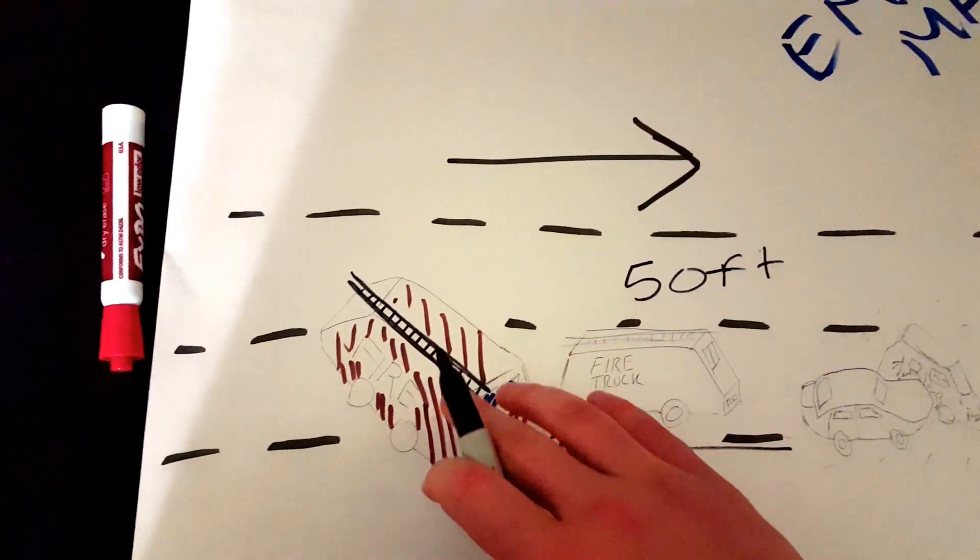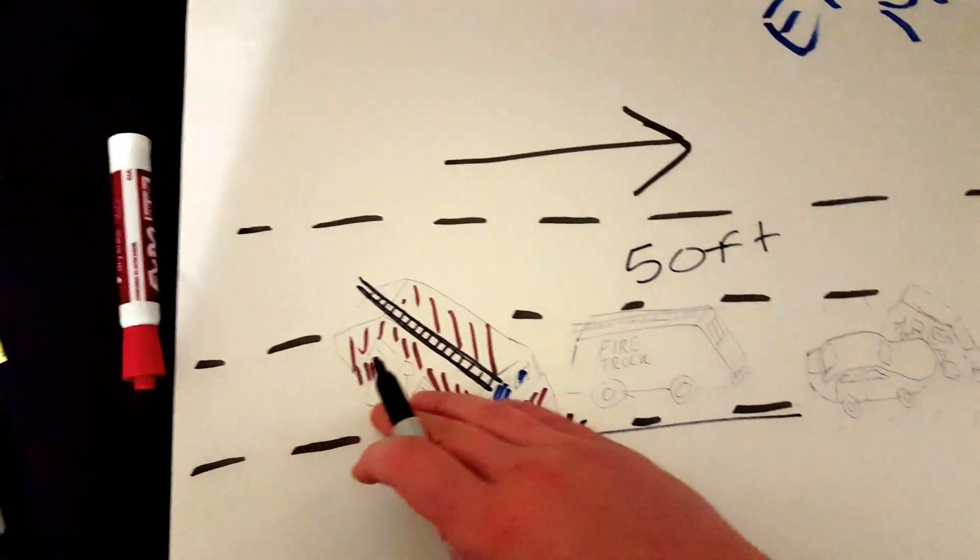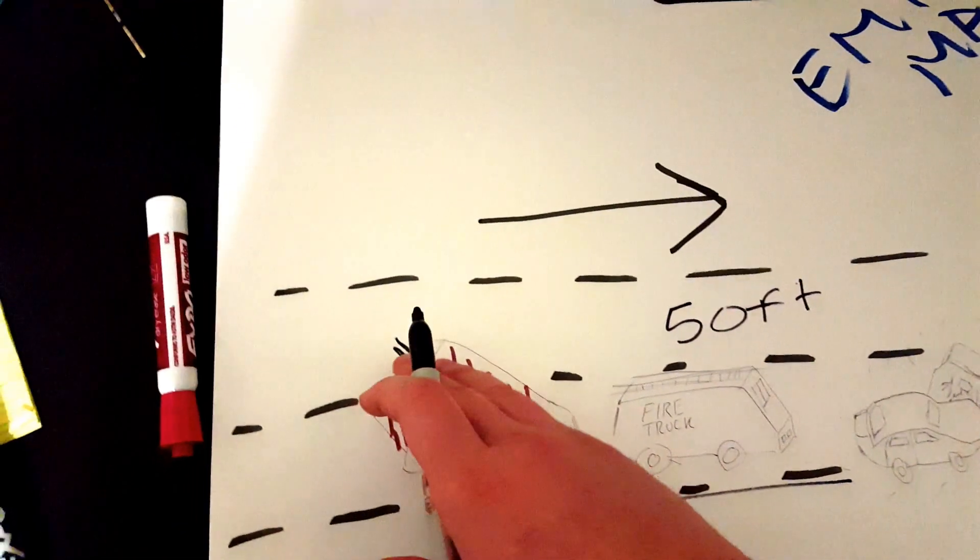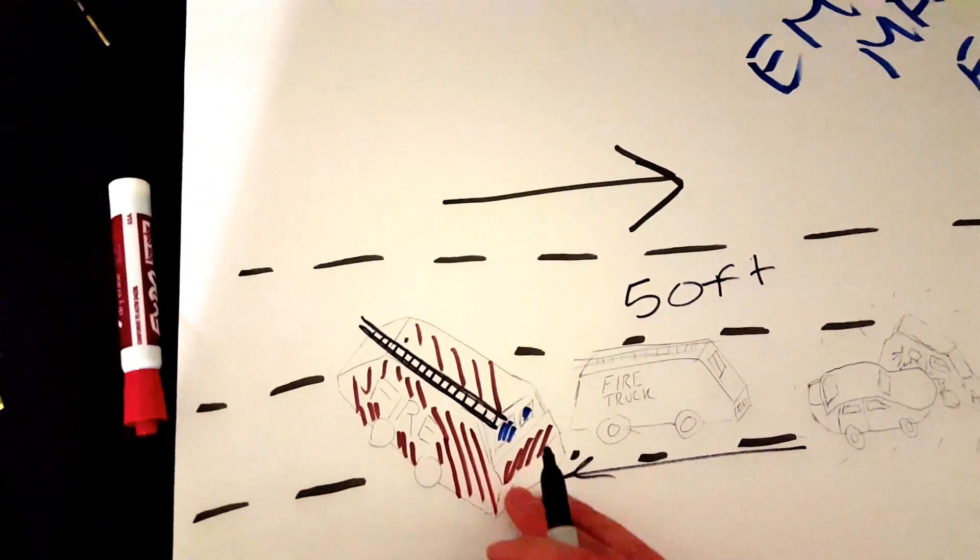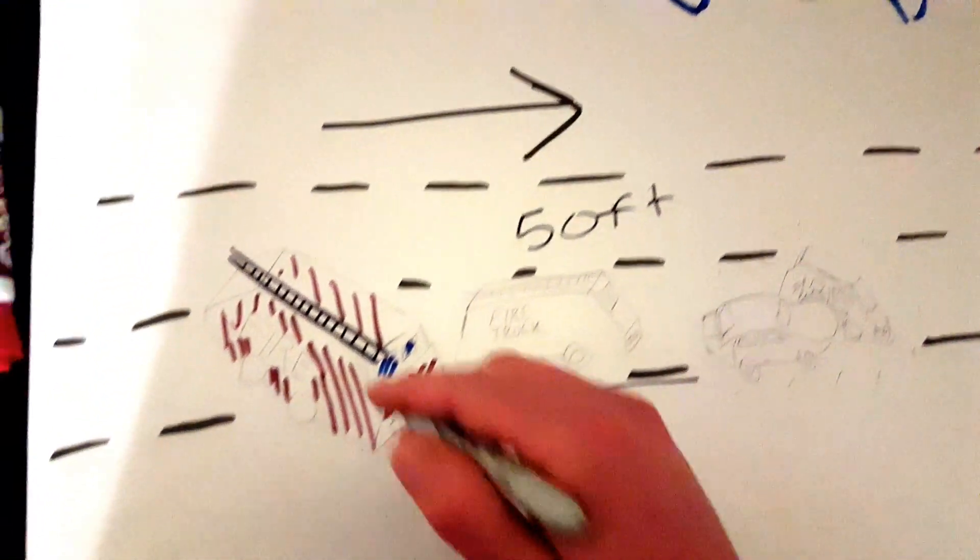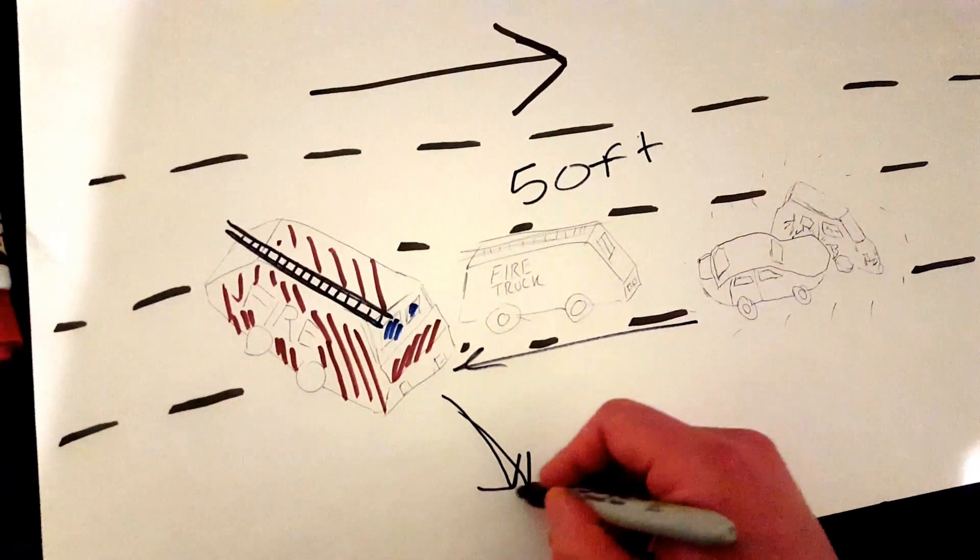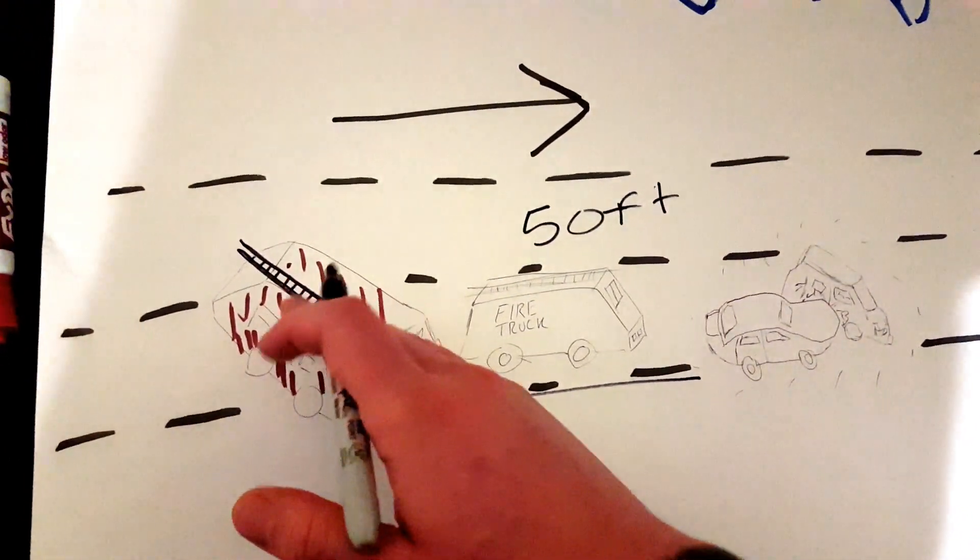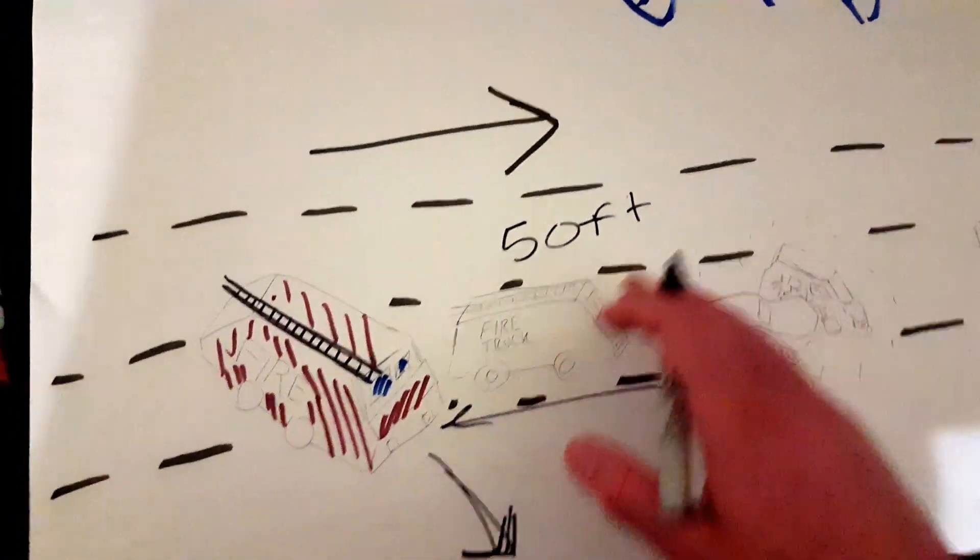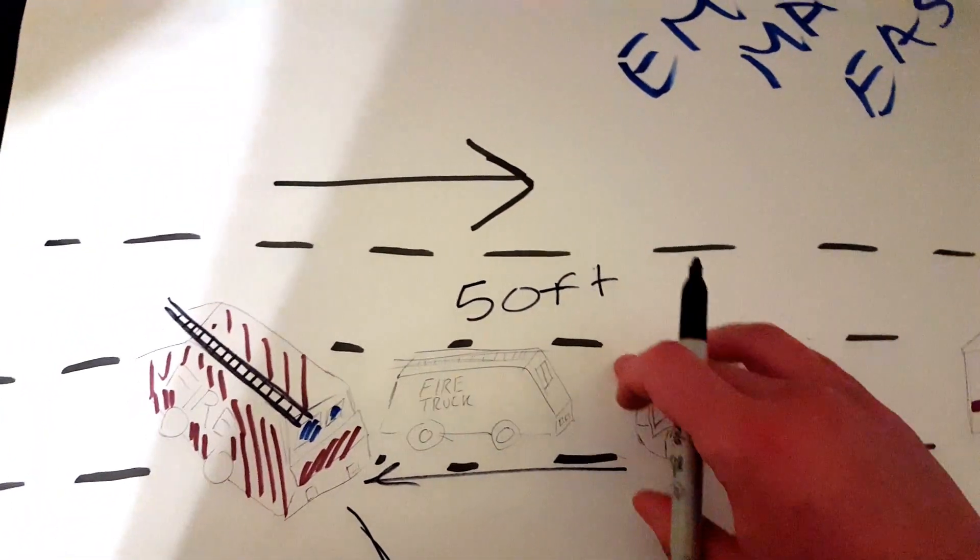By putting your vehicle right here, you're gonna absorb the shock, absorb the damage if anybody else does hit you. And by putting it at an angle, this will make the vehicle go away from the accident. That's the reason why you want to put it behind the accident at an angle, 50 feet.